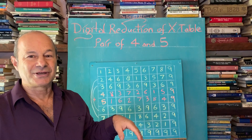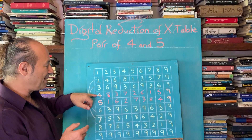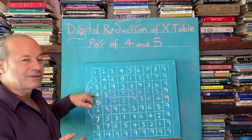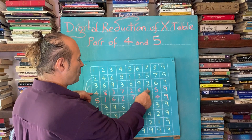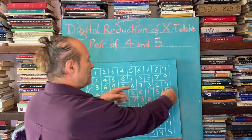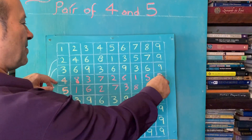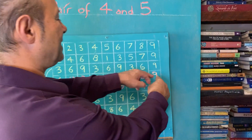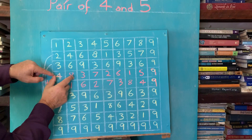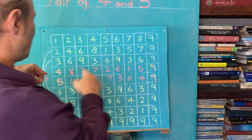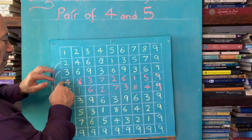We looked at the enneagram before, where the four times table went: four, eight, three, seven, two, six, one, five, nine. Four times nine is 36, and the next numbers — 40 and 44 — repeat the same sequence. So these nine numbers repeat forever; this is a periodicity of nine repeating digits.